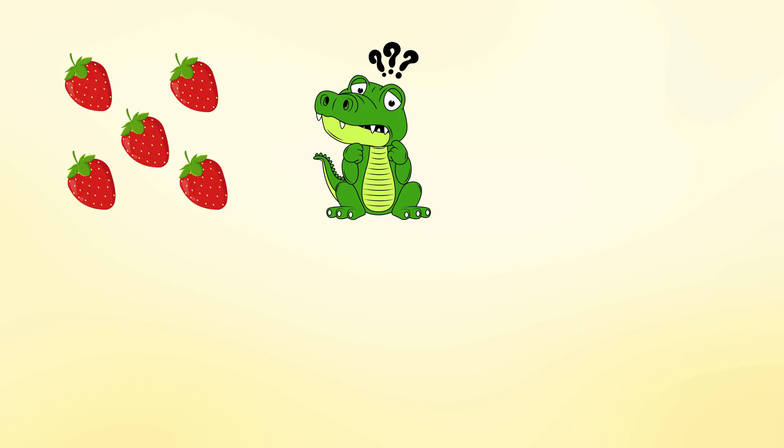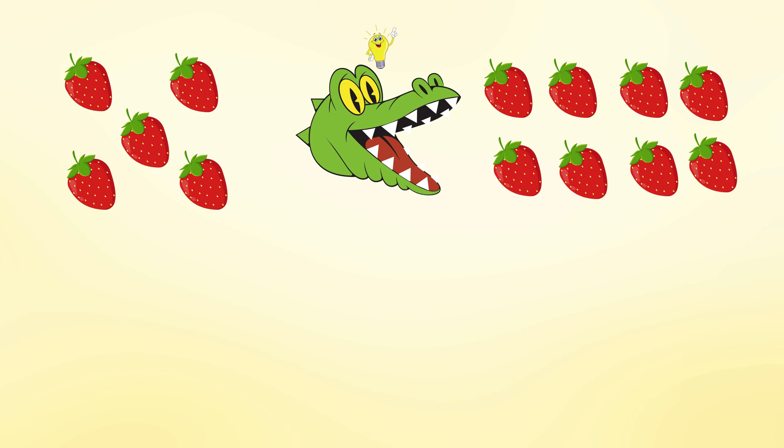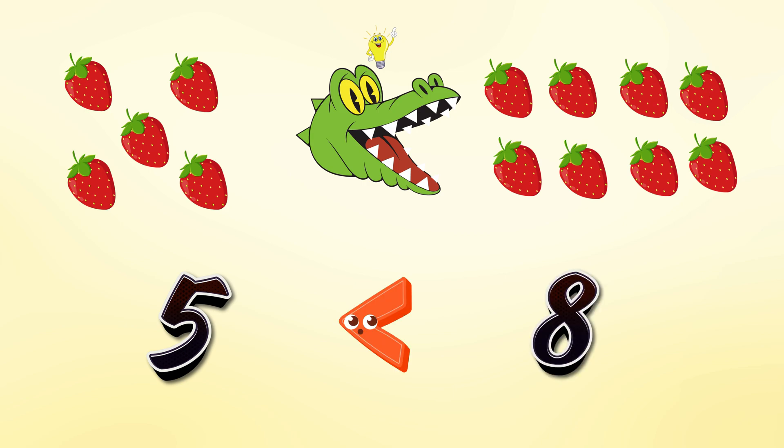We have one box with five strawberries. And another box with eight strawberries. So, which box will the crocodile eat? Of course, the crocodile only eats the larger portion. Therefore, 5 is less than 8.